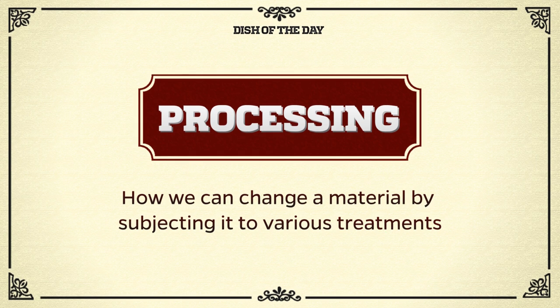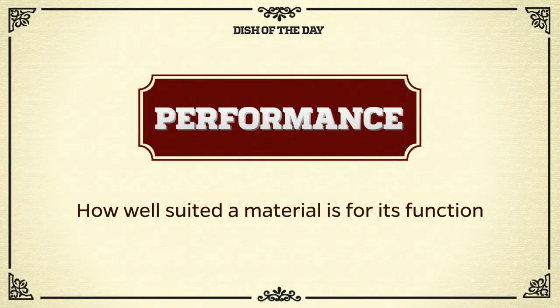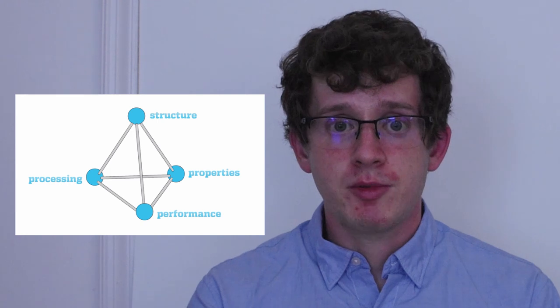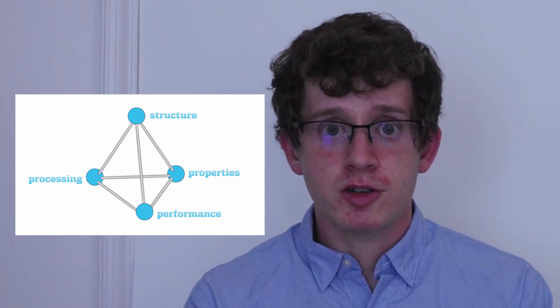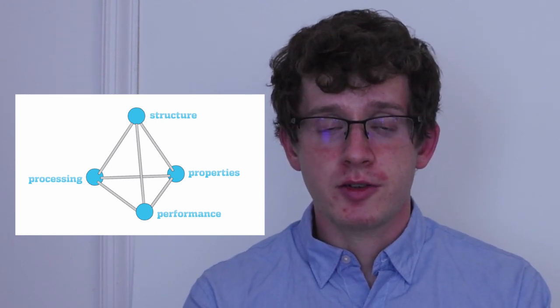Processing refers to how we can change a material by subjecting it to various treatments, such as heating, cooling, and rolling. These treatments change a material's structure, and thus its properties. Performance refers to how well a material is suited for the role we want it to play — this is affected by its properties. The material science tetrahedron encapsulates all of these major concepts of material science.